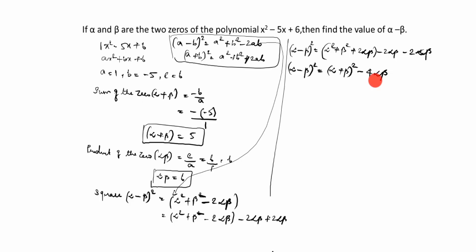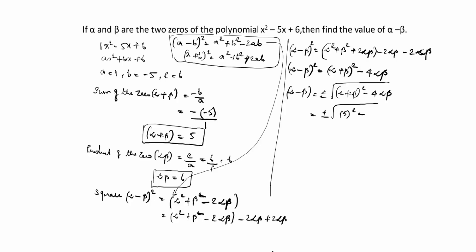So (alpha minus beta) squared equals (alpha plus beta) squared minus 4 alpha beta. We only need alpha minus beta, so we take the square root: alpha minus beta equals plus or minus the square root of (alpha plus beta) squared minus 4 alpha beta. Alpha plus beta is 5 and alpha beta is 6, so this becomes root of 5 squared minus 4 times 6 = root of 25 minus 24 = root of 1 = plus or minus 1. Therefore, alpha minus beta equals plus 1 or minus 1.